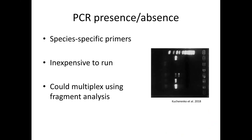For PCR presence/absence, this requires species-specific primers — sequences that match up with your target species and not others. You have to know what you're targeting; you can't use this to get all species within a water sample. It's very inexpensive — with just a standard thermocycler and agarose gel, you can do it for a few dollars per sample. You could also multiplex using fluorescent primers and fragment analysis, which adds a bit to the cost but is still relatively cheap.